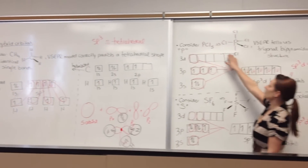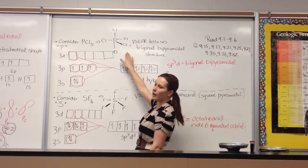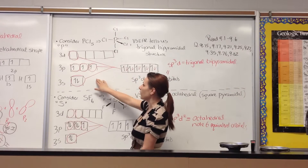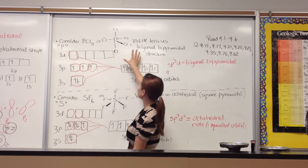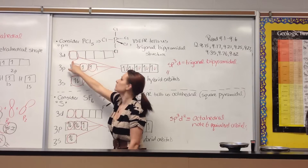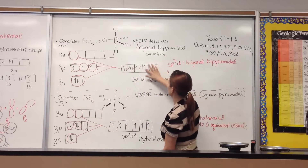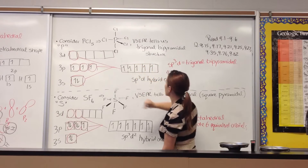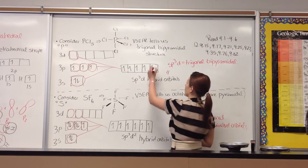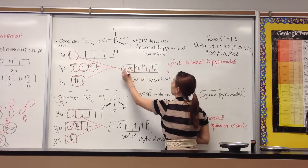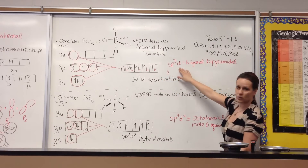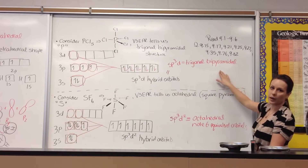Let's consider phosphorus pentachloride. VSEPR theory tells us we're going to have five equivalent phosphorus-chlorine bonds. We have to draw out the box diagram of phosphorus and account for five different bonds. The only way we can do that is to combine the S, three P's, and one of the D orbitals. When you combine them, you make five equivalent SP³d hybrid orbitals, and each electron pairs with one unpaired electron from each of the five chlorine atoms. Importantly, SP³d always makes the trigonal bipyramidal structure in VSEPR.